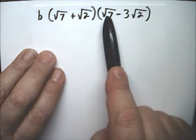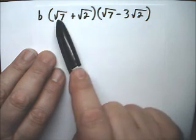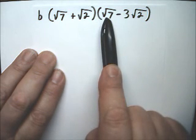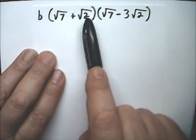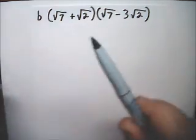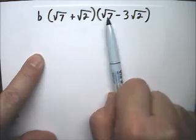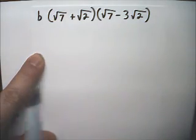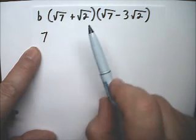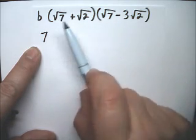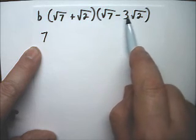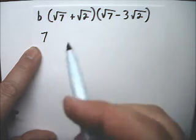This has to be multiplied times this, that's 1. This has got to be multiplied times this, that's 2. This has got to be multiplied times this, that's 3. And this has got to be multiplied times this, that's 4. So, first of all, radical 7 times radical 7, that's radical 49, or just plain 7. Radical 7 times this is minus 3 radical 14.